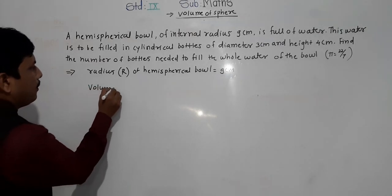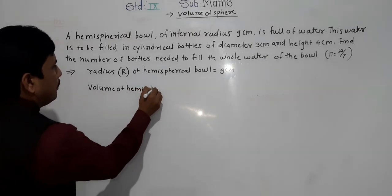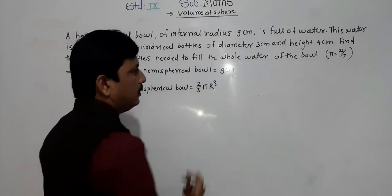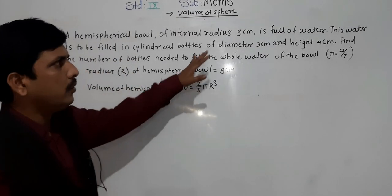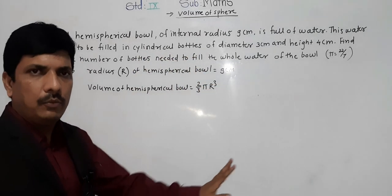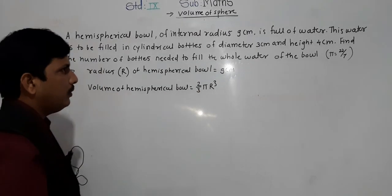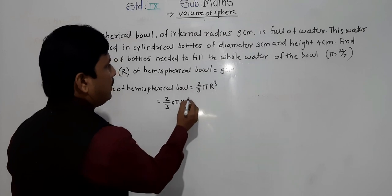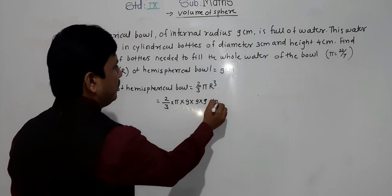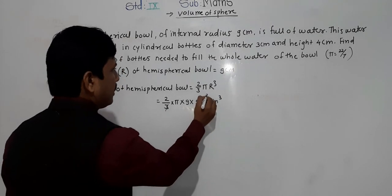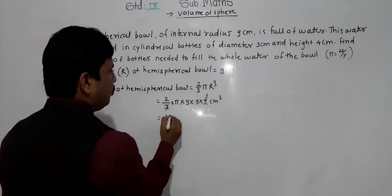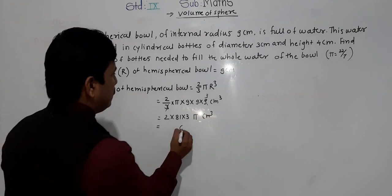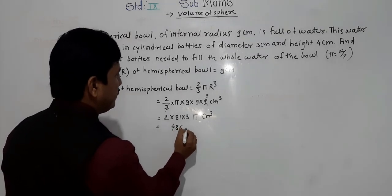Volume of hemispherical bowl equals 2 by 3 pi R cube, where R is the radius of the hemispherical bowl equals 9 centimeter. So: 2 by 3 into pi into 9 into 9 into 9. Dividing 9 by 3 gives 3, and 2 into 3 into 81 gives 486 pi centimeter cube. That is the volume of the hemispherical bowl.